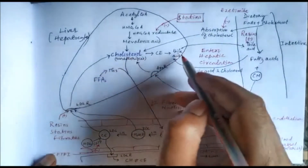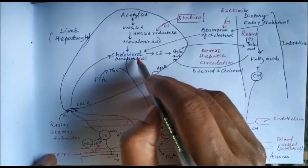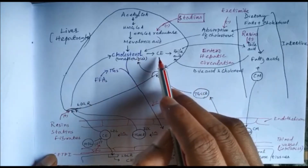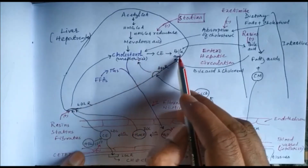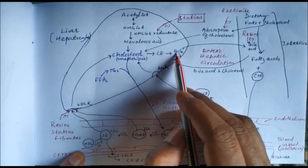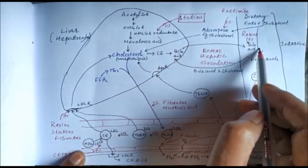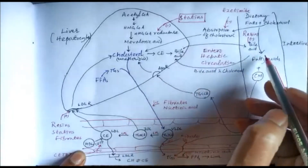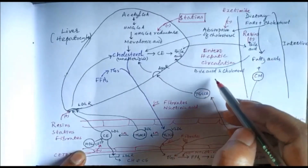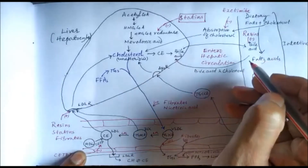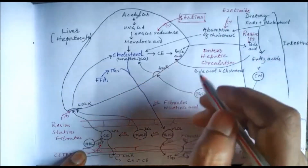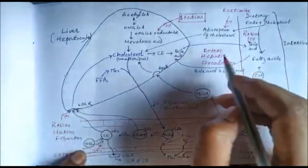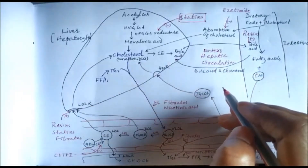From cholesterol, bile acids are formed. Cholesterol — unesterified cholesterol is esterified — and then they are converted to bile acids. Bile acids from the liver go to the intestine through bile, and then from the intestine through blood circulation they are again reabsorbed and enter the liver. This is called enterohepatic circulation.